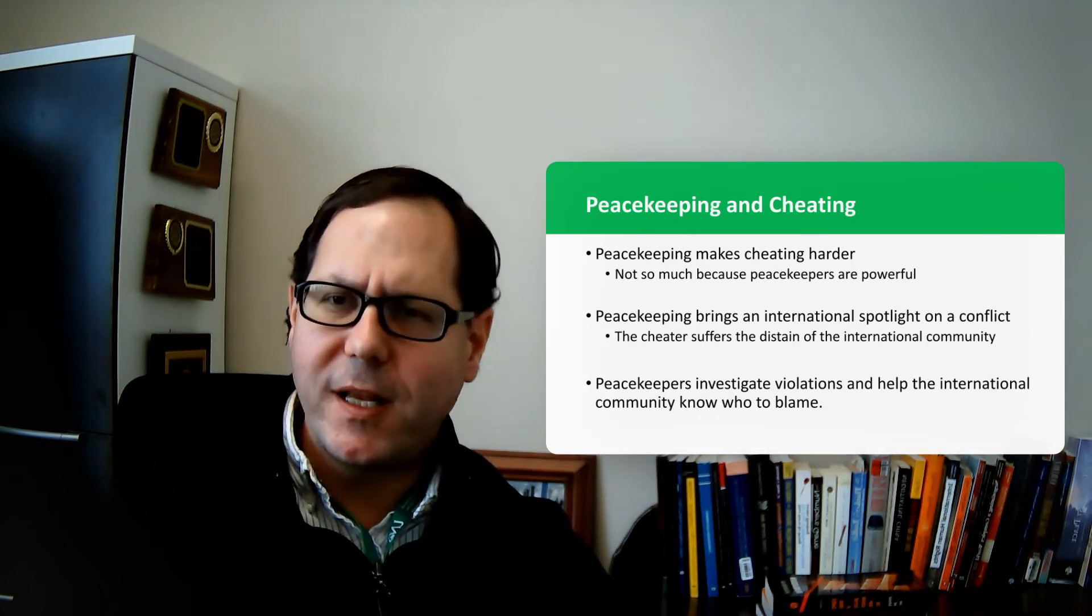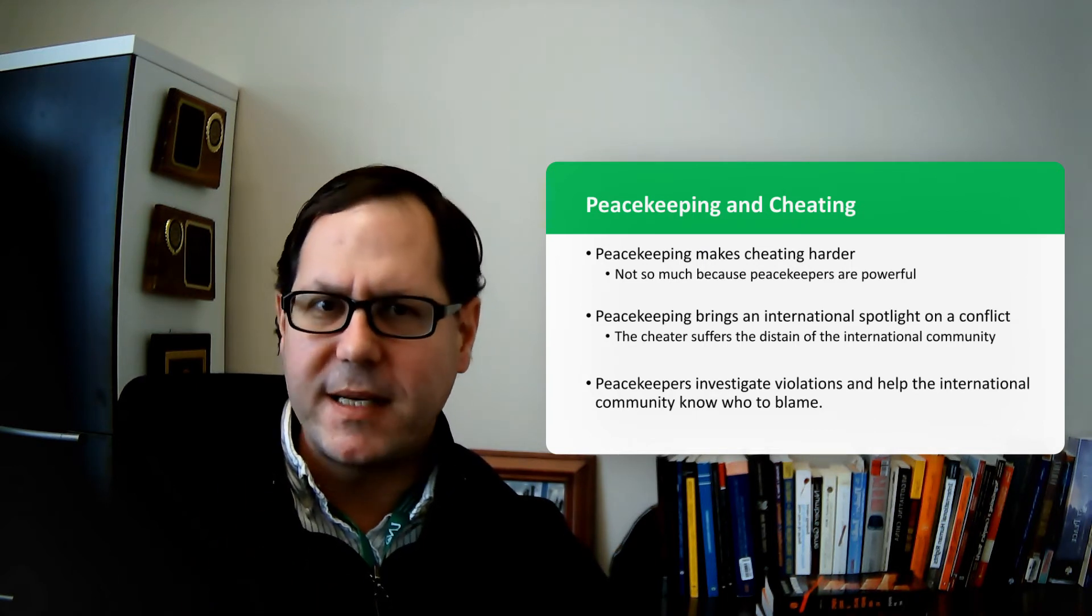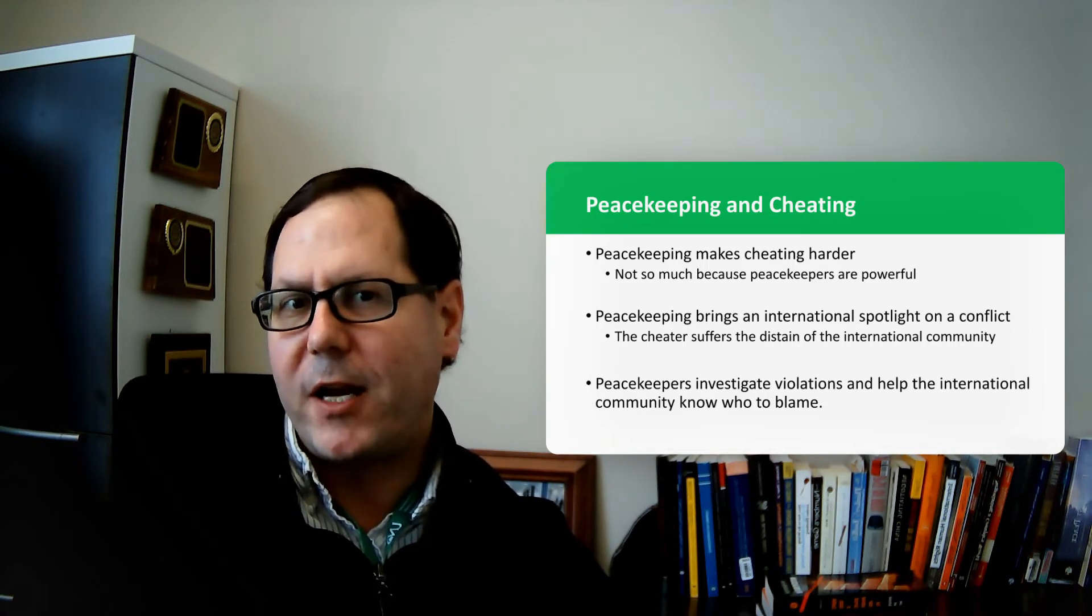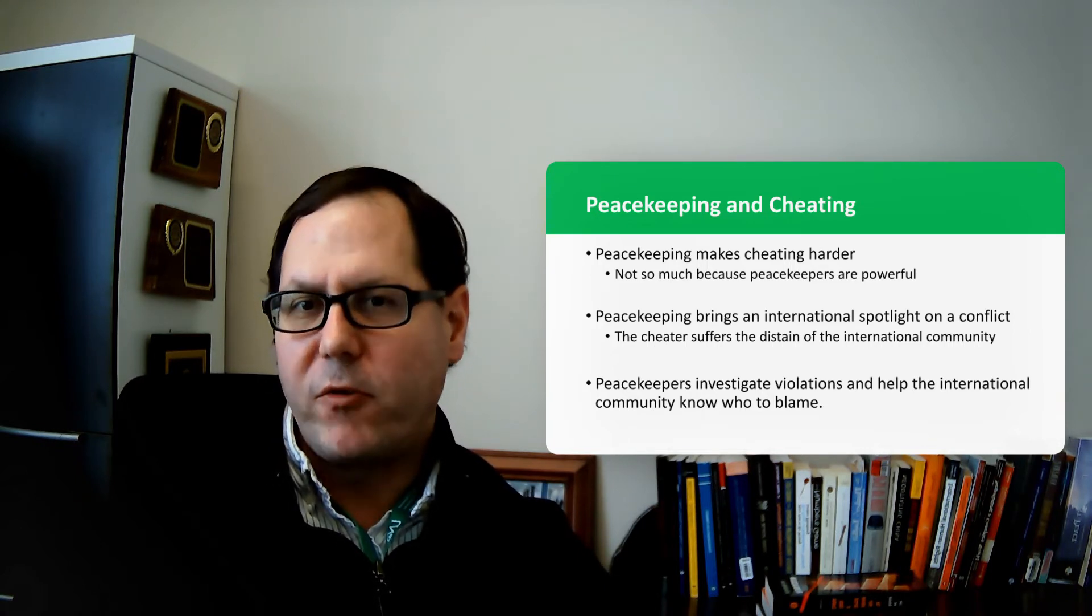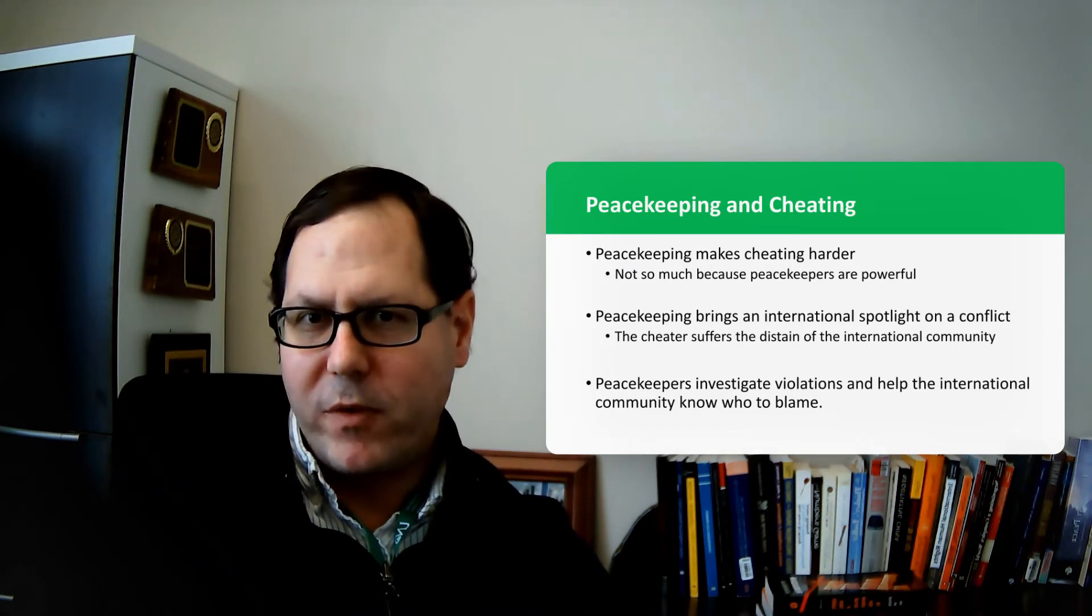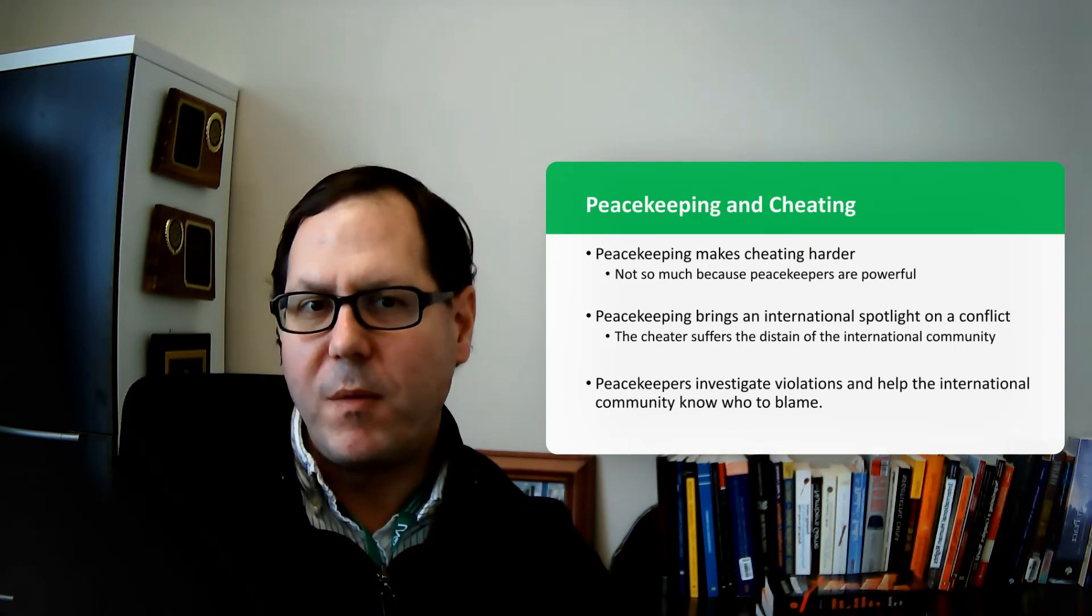Sometimes this comes in the form of an over-the-horizon force. I think in Sierra Leone, the peacekeepers on the ground weren't necessarily militarily powerful, but they were backed by a British contingent that could be called in if need be to provide additional firepower for a peacekeeping force that found itself in trouble. So that might be a way of being able to augment the ability of peacekeepers to actually affect things on the ground.